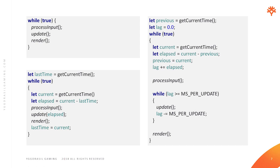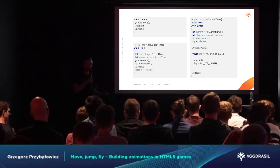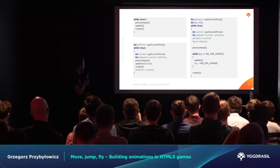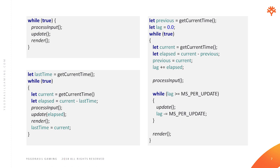Here we have some pseudocode with three implementations of the loop. The first one, in the top right corner, is as bad as it could be. It does the job — it processes input, updates, and renders — but there is no control over the speed of the game. How can we fix it? We can put a sleep or use setTimeout after the render, which will ensure the game won't run faster — but it could still run slower on older devices.